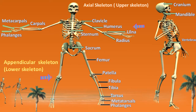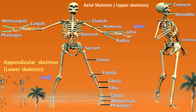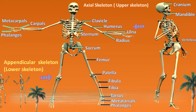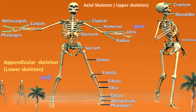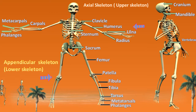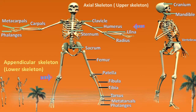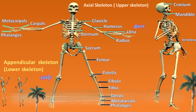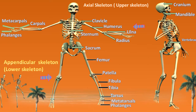Afterwards we have the patella. Now the patella is otherwise known as the knee bone. Then we have the fibula. The fibula bone is aligned to your little toe. And the tibia bone is aligned to your big toe. Then we have the tarsus. Following tarsus we have the metatarsus, and then we have phalanges, which are also known as your toes.